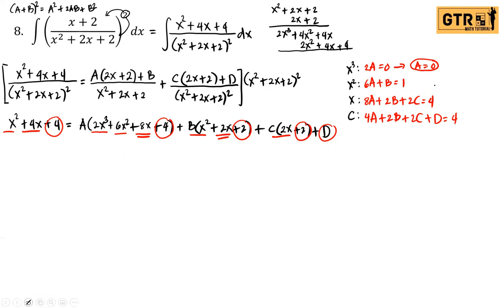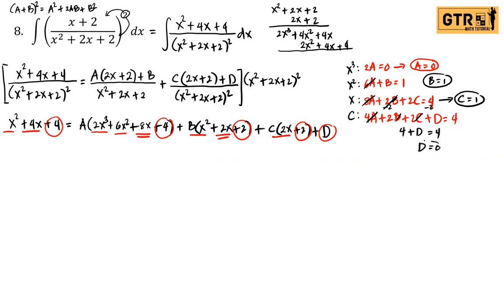We already have A = 0 and B = 1. Substituting into the x-coefficient equation: 0 + 2(1) + 2C = 4, so 2 + 2C = 4, subtract 2 from both sides, 2C = 2, divide by 2, so C = 1. Substituting all values into the constant equation: 0 + 2(1) + 2(1) + D = 4, so 2 + 2 = 4, giving 4 + D = 4, therefore D = 0.